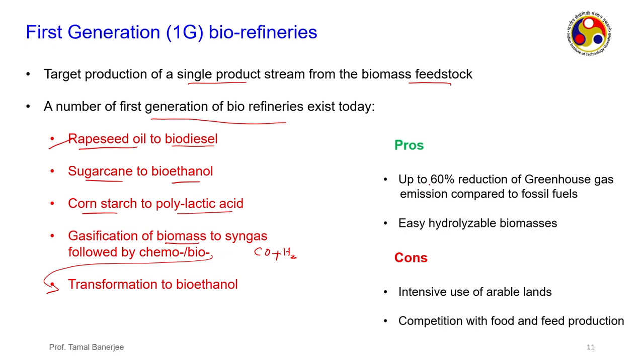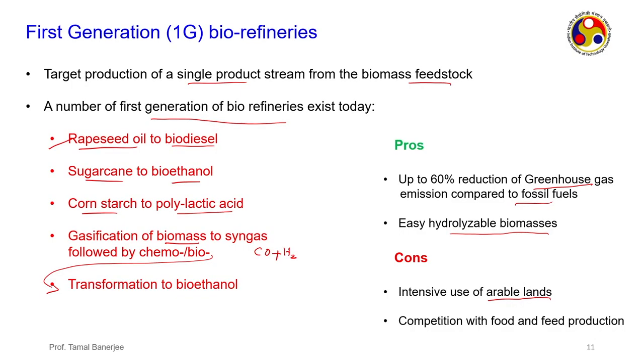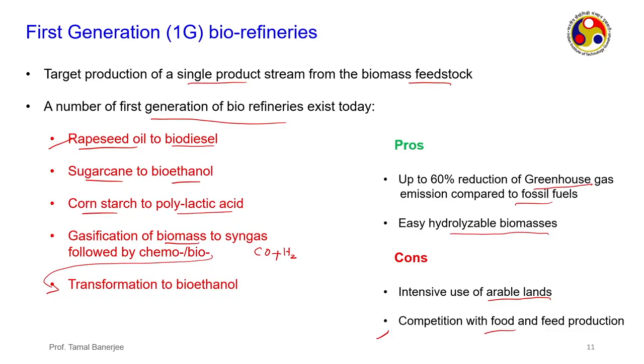What are the pros? Up to 60 percent reduction of greenhouse gas emissions compared to fossil fuels, and easily hydrolyzable biomass — meaning more cellulosic content and less lignin, so simple sugars are more abundant. But the problem is they take up arable land and compete with food production because we are growing these as part of agriculture. The fuel competes with arable land — that is one great disadvantage, which is why most 1G bio-refineries have been discontinued in favour of the advantages of 2G, 3G, and 4G bio-refineries.